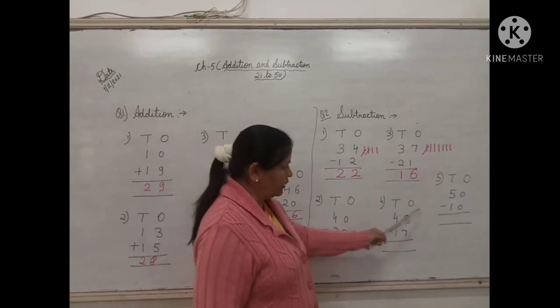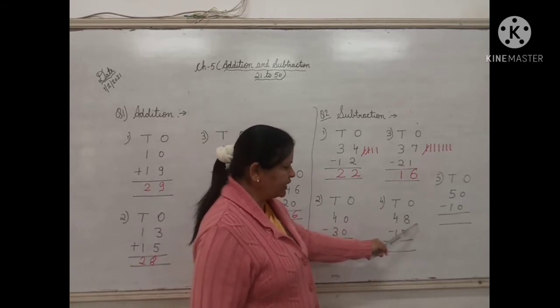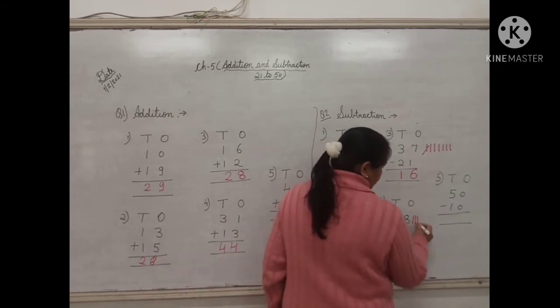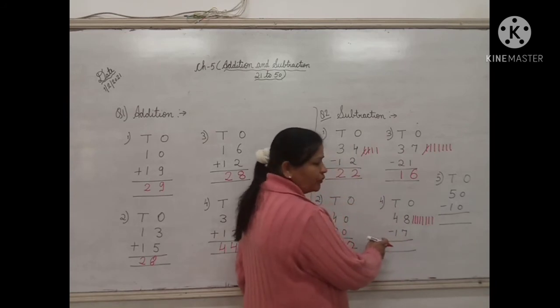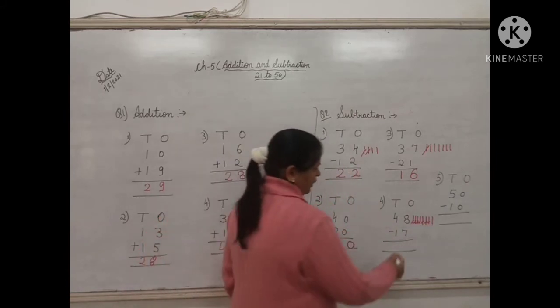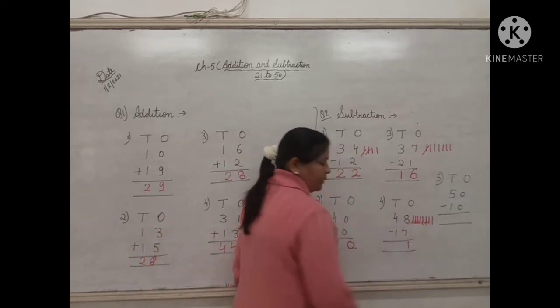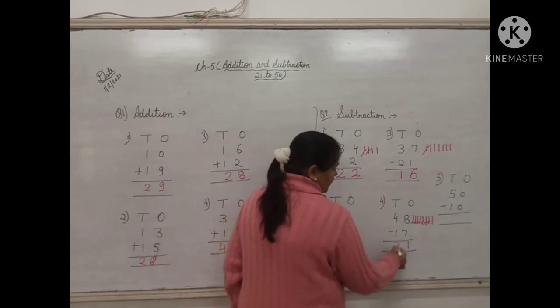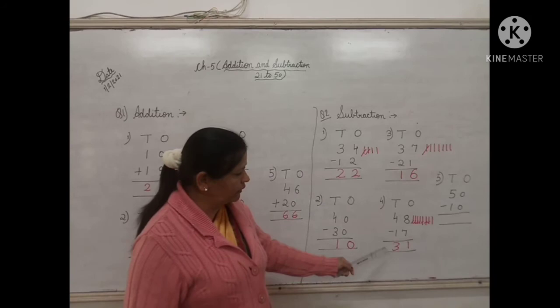Now the next one. The ones digit, the number is 8 minus 7. Make 8 lines: 1, 2, 3, 4, 5, 6, 7, 8. How much do we have to cut? 7. 1, 2, 3, 4, 5, 6, 7. How much line left children? 1. So 8 minus 7 will be 1. And 4 minus 1 will be 3. So the answer will be 31.